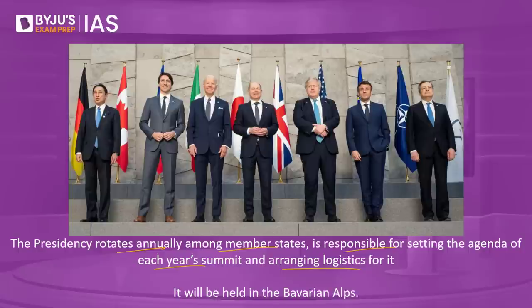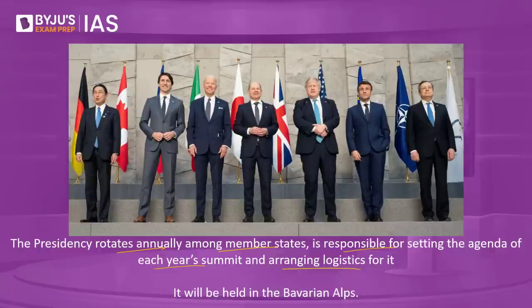Ministers and envoys, generally called Sherpas, come up with policy initiatives and discuss them together, and the national leaders ultimately sort out the issues to be addressed. At the end of the meeting, the G7 releases what is called a communique — a document which clearly outlines what has been agreed upon. Currently, Germany holds the presidency for the year 2022 and is hosting the G7 summit in the Bavarian Alps.